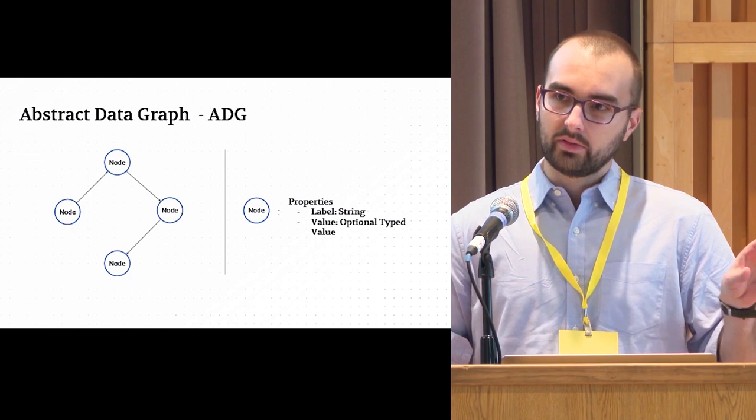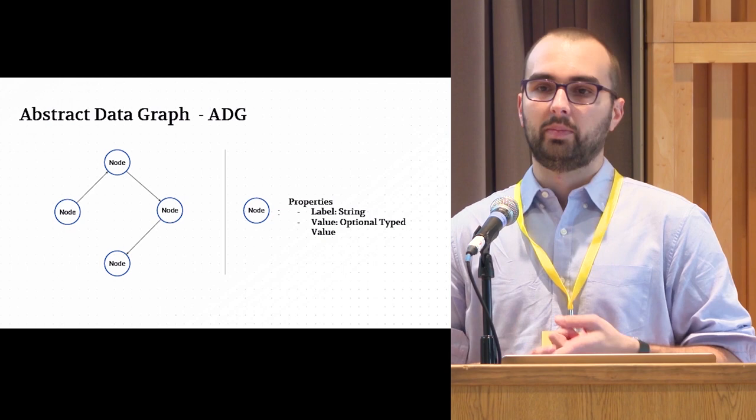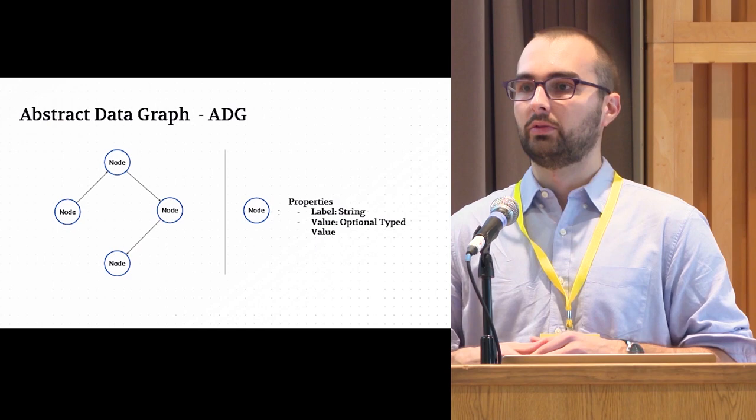This handles the first layer of abstraction — the first layer of variance — which is: as a data engineer, I want to be able to get data from Postgres, from MongoDB, from MS SQL, and I don't want to lose time rewriting the same scripts over and over again.